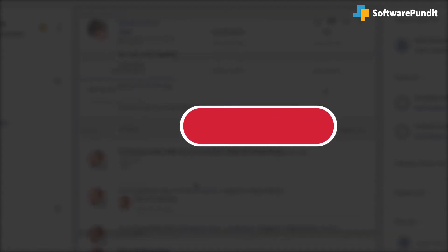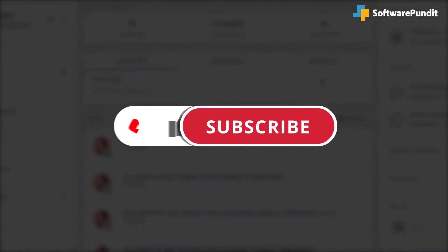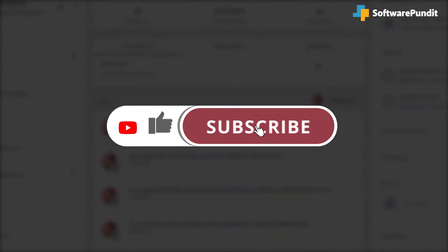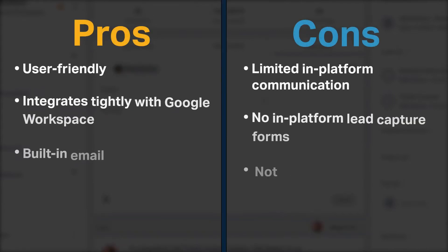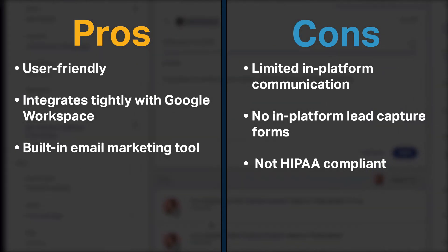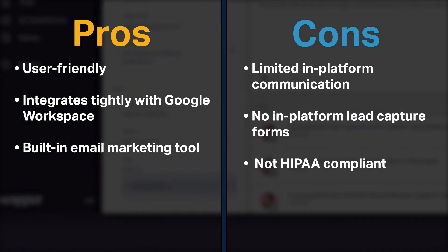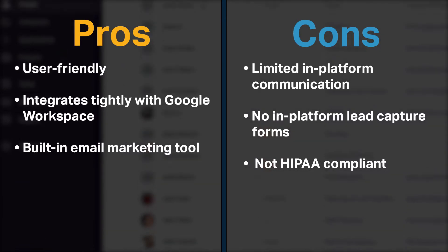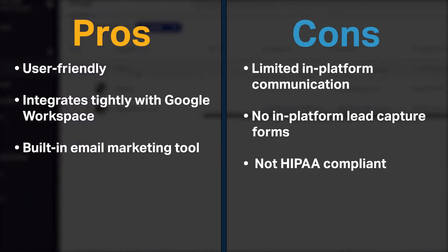If you're new here, hit the like and subscribe button to be notified of our future software reviews. Copper is one of the most user-friendly CRMs available. It integrates tightly with Google Workspace and offers a built-in email marketing tool. On the other hand, email is Copper's only in-platform communication channel, and Copper also doesn't offer an in-platform lead capture forms feature.